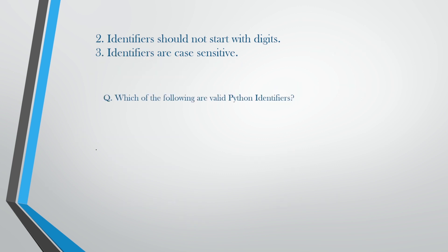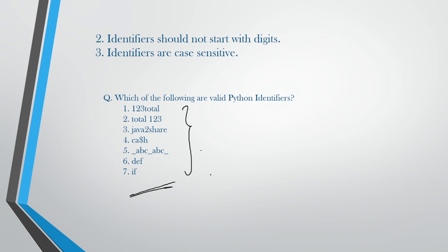Now let us add certain questions — you can answer in the comment section. Which of the following are valid Python identifiers? 1) 123total, 2) total123, 3) java2share, 4) $cash, 5) _abc_abc, 6) def, 7) if. You can give a right or wrong mark, or true or false in the comment section. We will solve this in the next video.